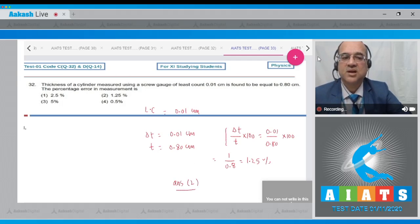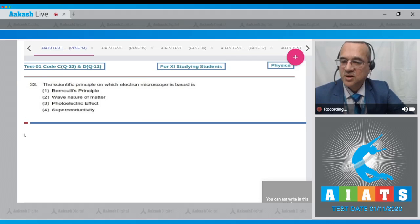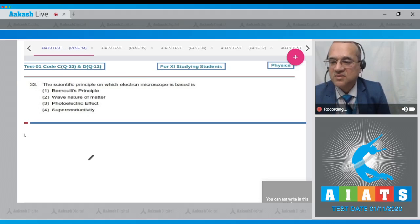So let us go to the next problem. Dear student, question number 33 reads, the scientific principle on which the electron microscope is based is Bernoulli's principle, the wave nature of matter, the photoelectric effect, or superconductivity. So this is a factual question. Electron microscope works on the wave nature of the matter, that electron has the wave character. So the answer to this question is option number 2.